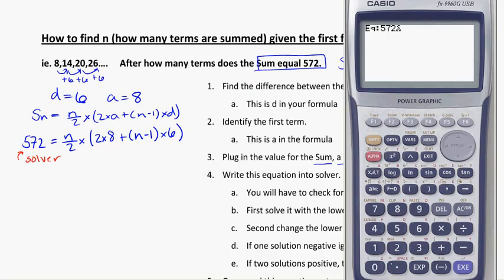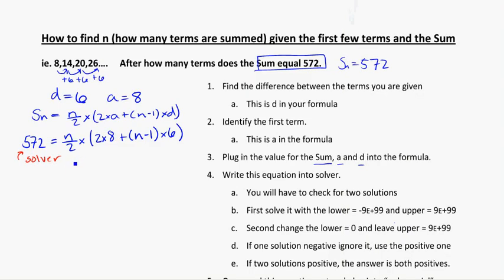572 is equal to something you don't know, divided by 2, times bracket 2, times the first term, which is 8, plus bracket x minus 1, bracket, times the difference, which is a positive 6. Enter. And I'm going to go ahead and press Solve, and I see that I've got x is equal to 13. So that's telling me here that, from Solver, n is equal to 13. So 13 terms are being added.